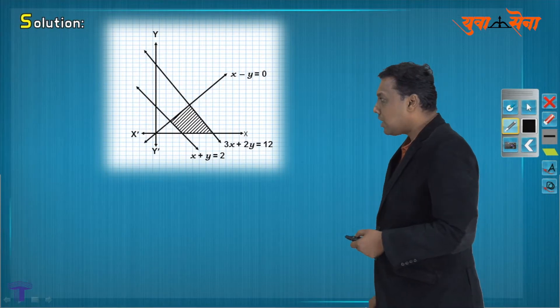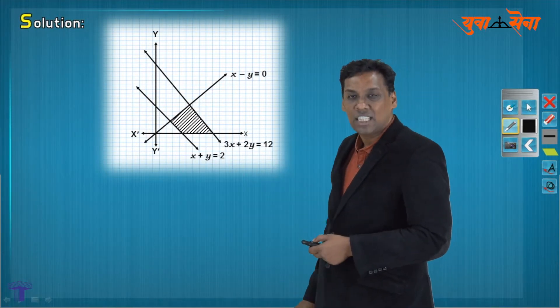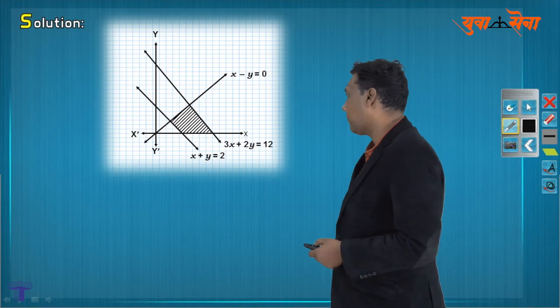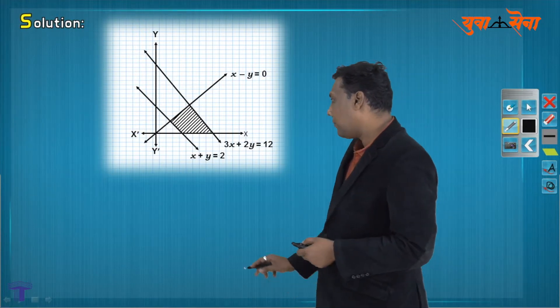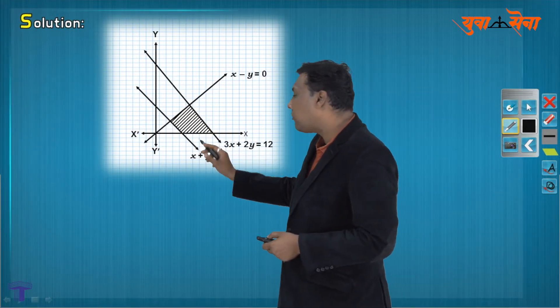Now, the feasible region is nothing but this. They have told us x and y both positive, strictly first quadrant. If you remember, the answer should be at one of the corners of the region.